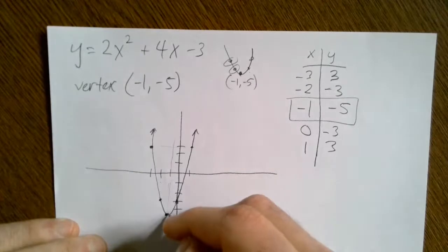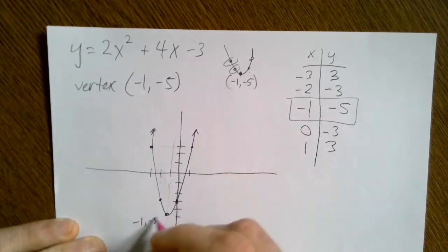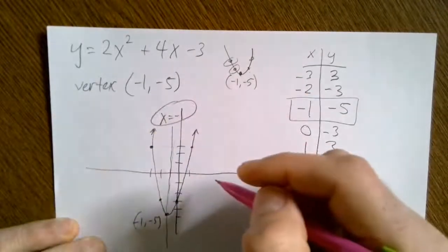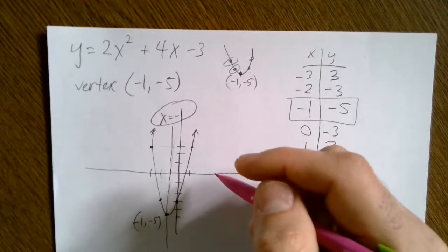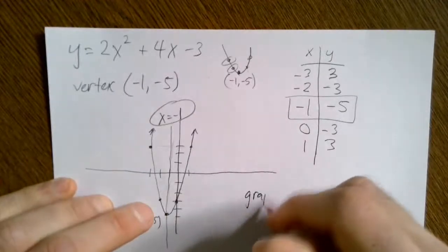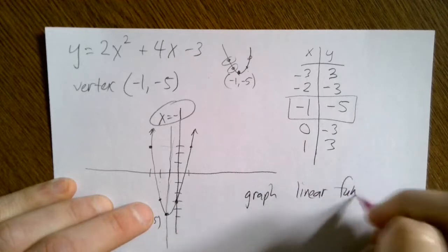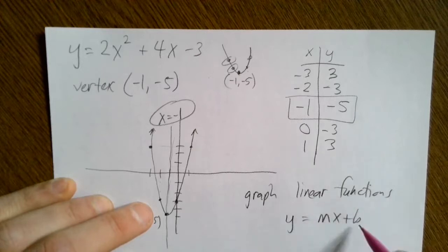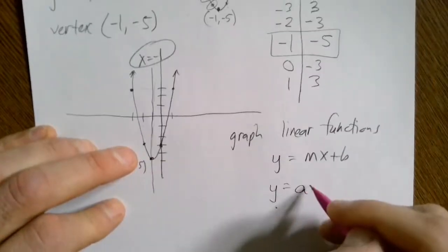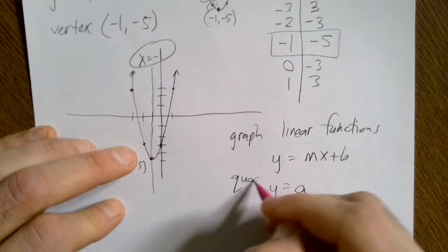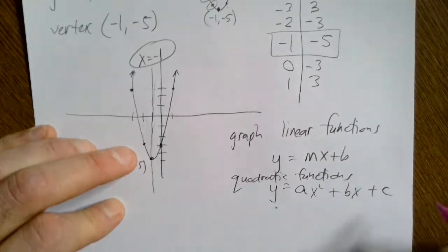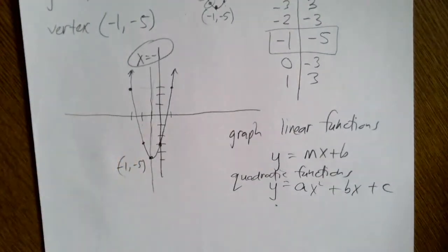Make sure you label the vertex and the axis of symmetry — here it's x = -1 — and you're done. So to summarize: we can graph linear functions using slope-intercept form with the y-intercept and slope, and we can graph quadratic functions in the form ax² + bx + c by finding the vertex with -b/2a and picking smart points. Try some of the problems and let me know if you have any questions.